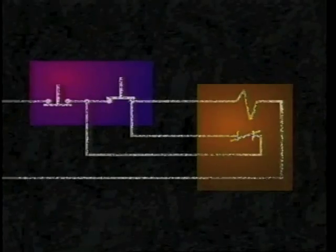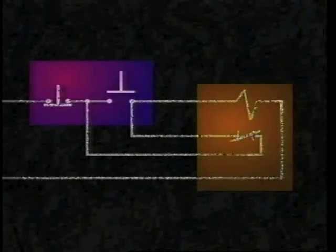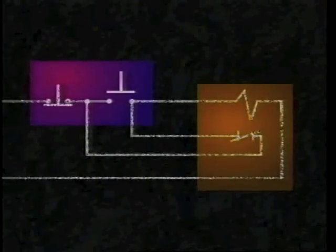Contactors are closed by manual operation of a remote control device, which energizes a coil. Once closed, they're held closed by this coil. Should a loss of power occur, the coil will release the contactor to the open position.